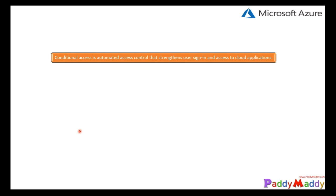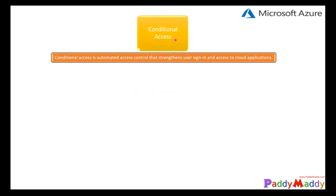In the upcoming demo lectures we will be working with a P2 license so I can show you all the features that are part of conditional access as well as Azure AD. Conditional access is an automated access control that strengthens your users' sign-in and access to your cloud applications.